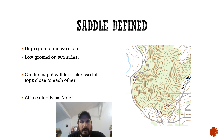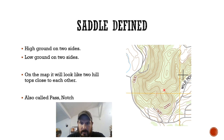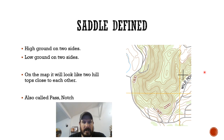The next term is a saddle. As we're standing on the ground you're going to have high ground on two sides and low ground on two sides. So you have high ground like this hilltop and this hilltop, and low ground like this draw and this draw. Right here where the cursor's at, that's going to be your saddle — right there in the center. You'll also have one up here between this hilltop and that hilltop, dropping down. These are also called passes or notches.